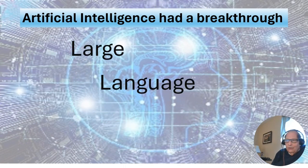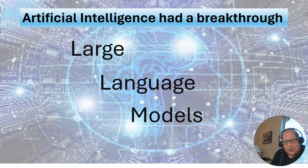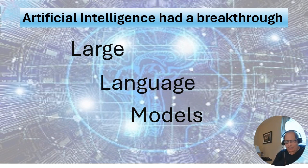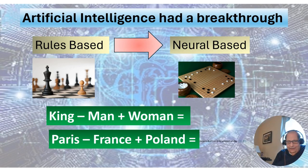These are called large language models. Basically, think about sending out very powerful robot spiders — millions of them, billions of them — and they pour over all digitized information. They look through the Library of Congress, Wikipedia, the internet, Twitter feeds, Facebook feeds, and all that kind of stuff, gathering up that huge amount of data.